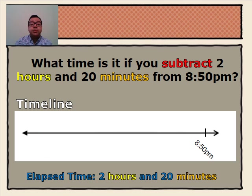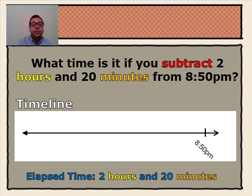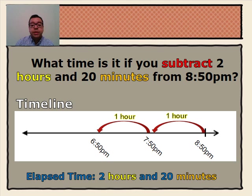What time is it if you subtract 2 hours and 20 minutes from 8:50 p.m.? We have our end time marked on our timeline, 8:50 p.m., and then we'll subtract our elapsed time, 2 hours and 20 minutes. From 8:50 p.m., taking away 1 hour will get us to 7:50 p.m. From 7:50 p.m., we subtract the other hour and it will get us to 6:50 p.m.